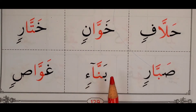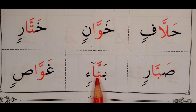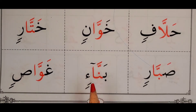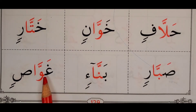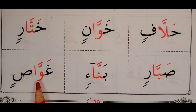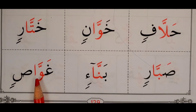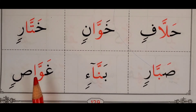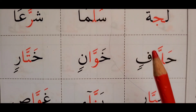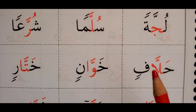Tayyib. Banna'in. Then we have Ghawwācin. Ghawwācin. Tayyib. Let's repeat from the beginning one more time here.